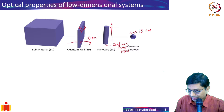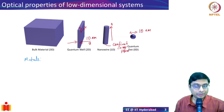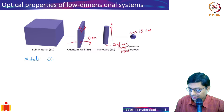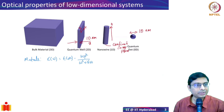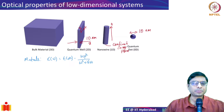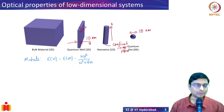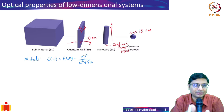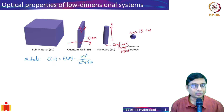Metals are described by the Drude model. We have: epsilon(omega) = epsilon_infinity minus omega_p squared divided by (omega squared plus i*gamma*omega). This is valid for, say, a bulk piece of metal a couple of centimeters thick. But what if I try to confine it to a quantum well — make a metal film of, say, 20 nanometers? What will happen to the optical properties?